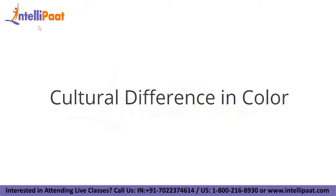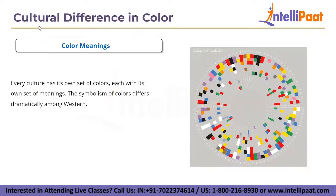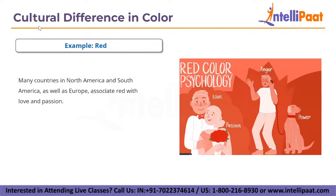Our eyes can perceive up to 10 million colors. In something like a website, color directs the eye, evokes emotion, communicates meaning, and ultimately helps establish a company's identity. In cross-cultural communication, there is no hard-coded formula — perceptions vary from region to region, and a single color may have different and even contrasting meanings around the world. For example, in many western countries such as North America and Europe, red is associated with love and passion.